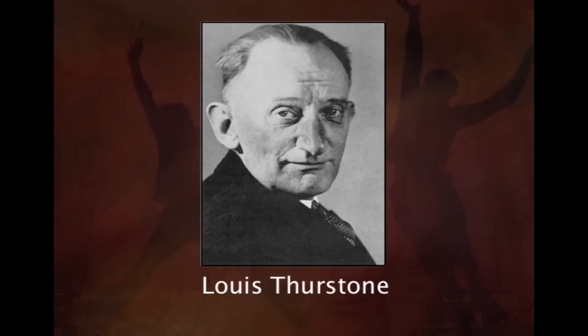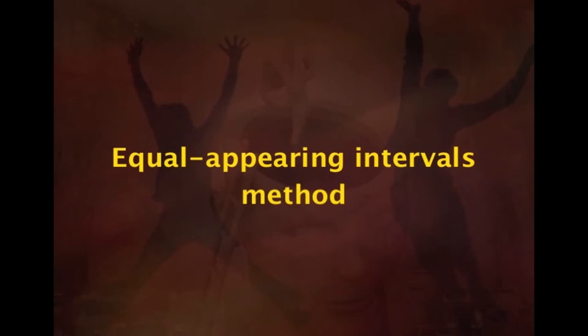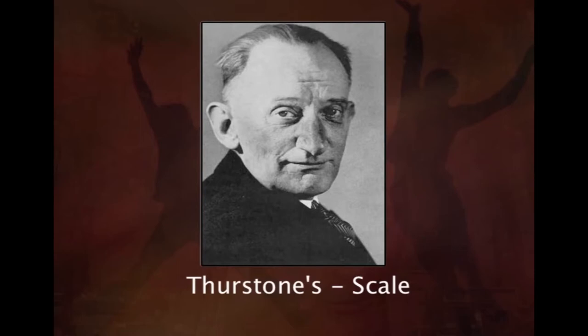Let us first talk about Thurstone's scale. Thurstone's scale is the first formal technique used to measure attitude. This particular attitude measurement was intended to measure attitude towards religion. It is a very old technique, around 87 years old, formulated to measure the attitude towards religion. The scale is also popularly known as the equal appearing intervals method, and the construction of this particular Thurstone scale is a very complex process.